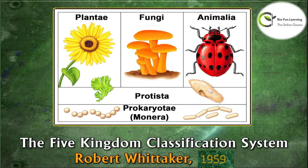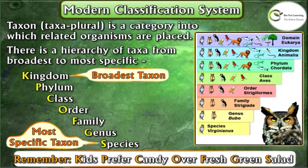According to the most recent classification system of Robert Whittaker, it is divided into five kingdoms: Plantae, Fungi, Animalia, Protista, and Monera. Each of these five major groups are known as kingdoms. Down from each kingdom, living organisms are classified into six hierarchical levels: phylum, class, order, family, genus, and species.